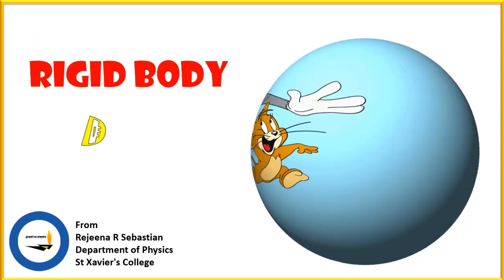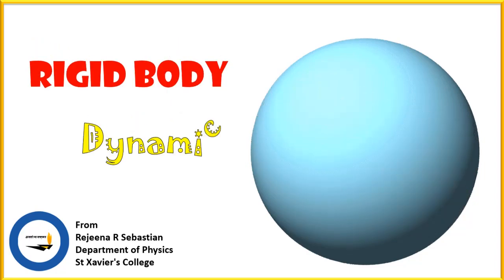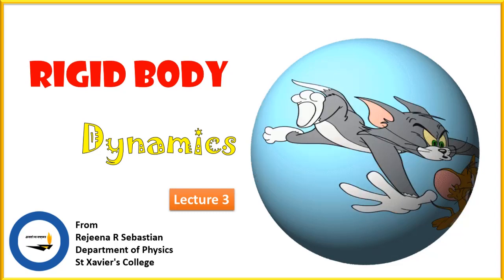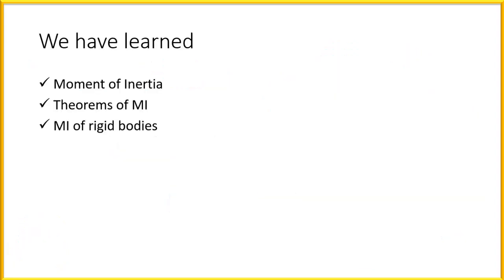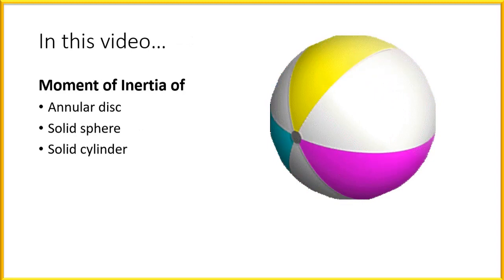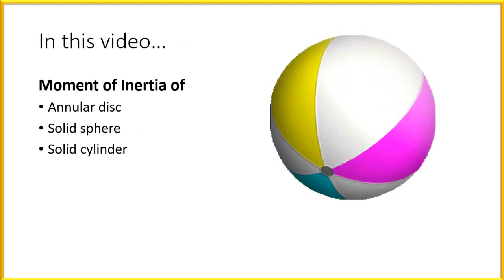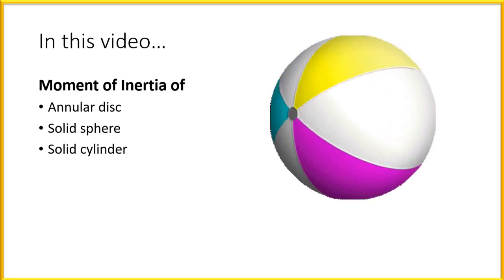Hello dear student, welcome to another lecture in Dynamics of Rigid Bodies. This is my third lecture in Dynamics of Rigid Bodies. So far we have learned about moment of inertia, theorems of moment of inertia, and also looked into moment of inertia of some rigid bodies such as rectangular lamina, a disc, etc. In this video, we will learn about the moment of inertia of an annular disc, a solid sphere, and a solid cylinder.